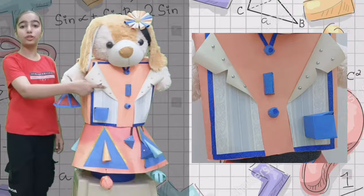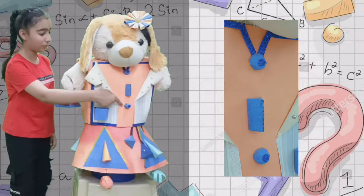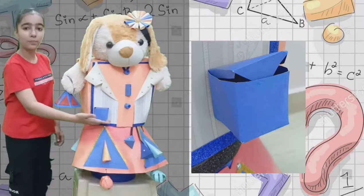This top is in the shape of cuboid consisting of buttons in the shape of triangular prism and hemisphere. This pocket is in the shape of cube.